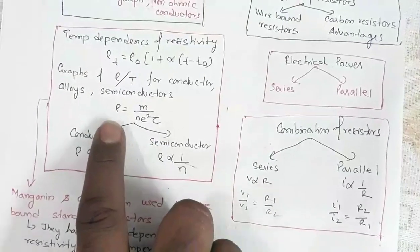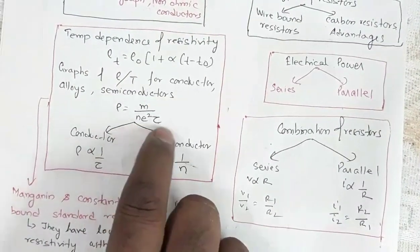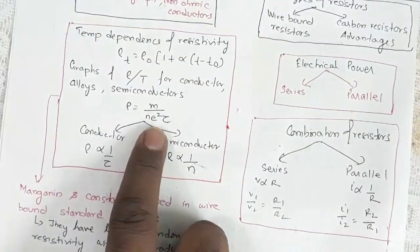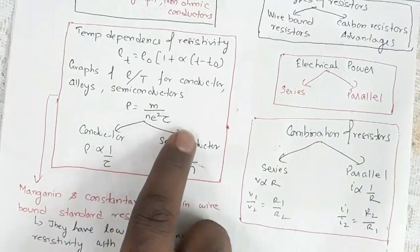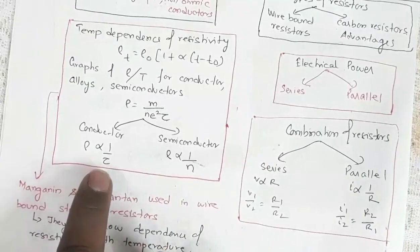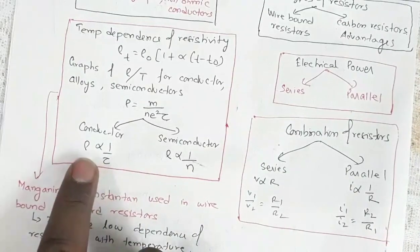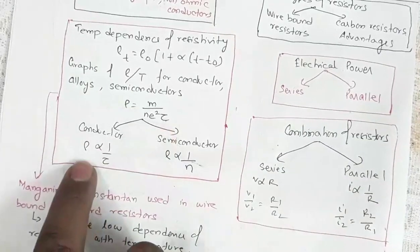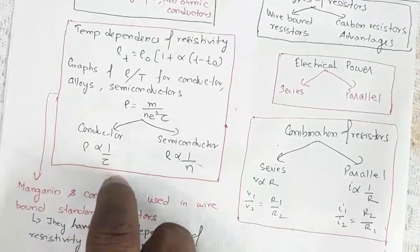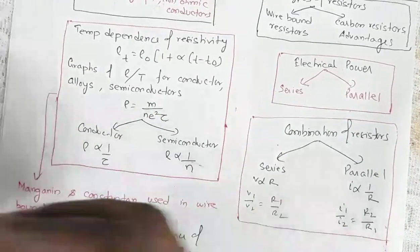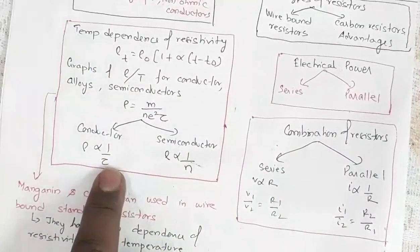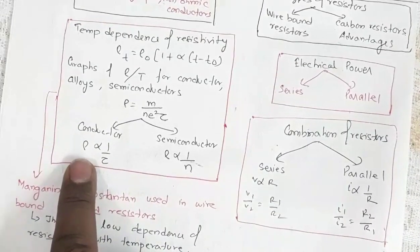The relation ρ = m / (ne²τ) — here m is the mass of charge carriers, n is number density, e is the charge, and τ is the average relaxation time. For conductors, resistivity is governed by τ, and ρ is inversely proportional to τ. Increasing temperature increases kinetic energy, leading to more frequent collisions, which decreases τ, so resistivity increases for conductors.